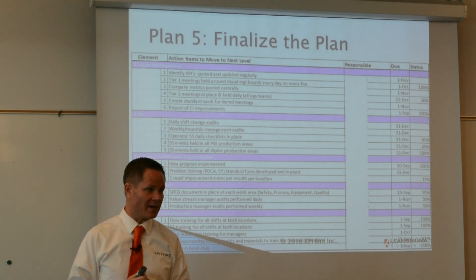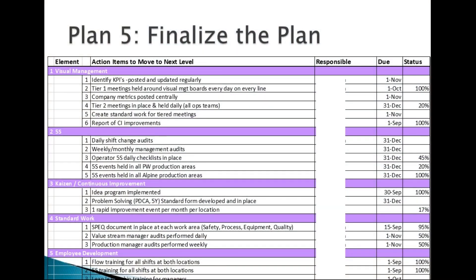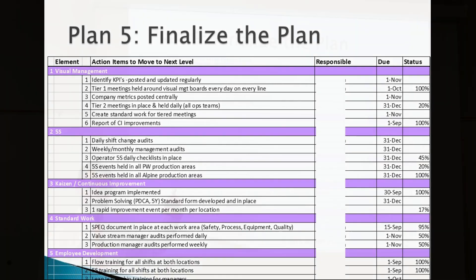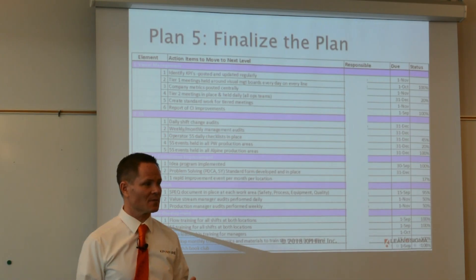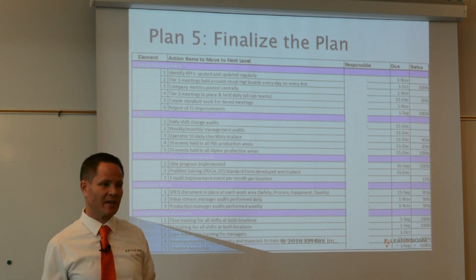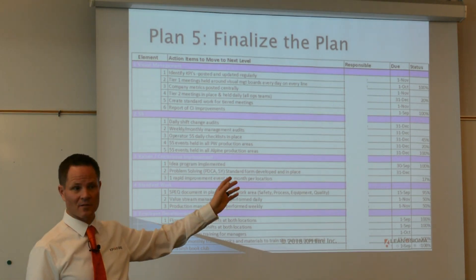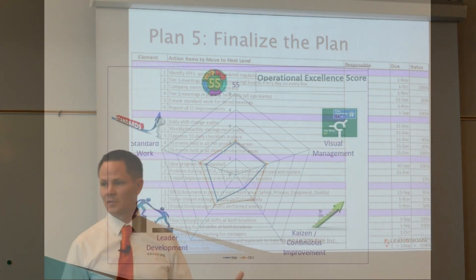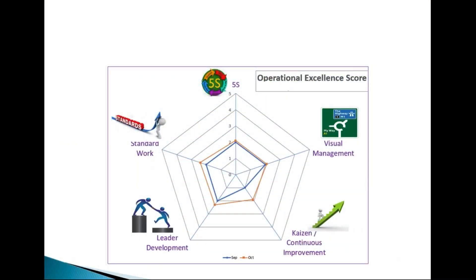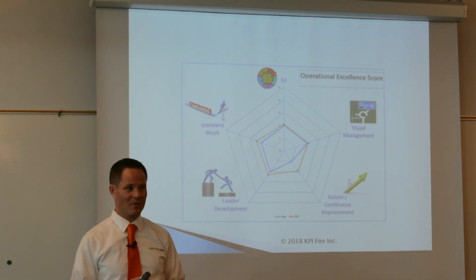Step five: finalize your plan. Take the things you want to accomplish — 5S, visual management, kaizen — and break them down into measurable, step-by-step items with owners, due dates, and status updates. Make your results visual so people can see progress. That's the planning phase.